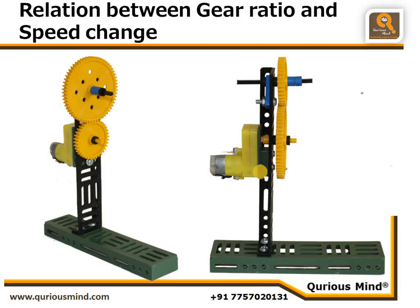To summarize: smaller gear on motor and bigger gear on assembly means the assembly rotates slow; bigger gear on motor and smaller gear on assembly means the assembly rotates faster. Now here's a task: we have a gear in our kit that has only 12 teeth. Instead of the medium gear, use this smallest gear and see how fast the fan rotates. The big gear has 60 teeth and the small gear has 12 teeth — do the calculation and tell me how fast the fan will rotate. Write your answer in the comments!